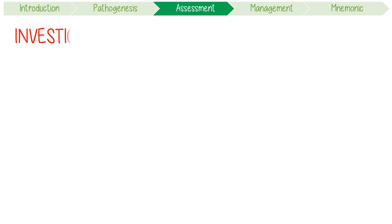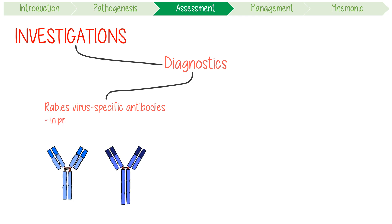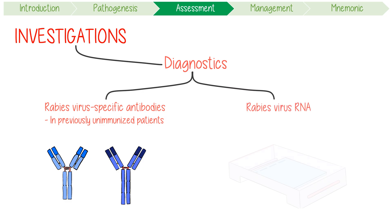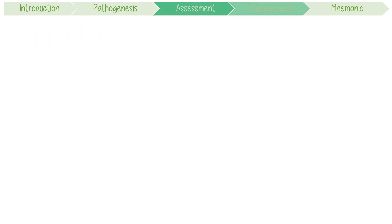In terms of investigations, most routine tests come back normal. Our main diagnostic options are rabies virus-specific antibodies, but only in a previously unimmunised patient. Alternatively, we can detect rabies virus RNA via RT-PCR in fresh saliva samples or skin biopsy specimens.